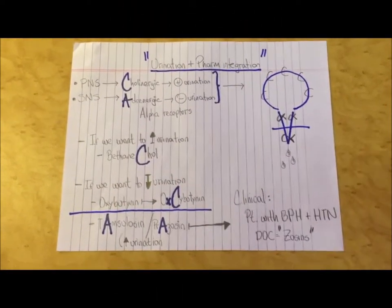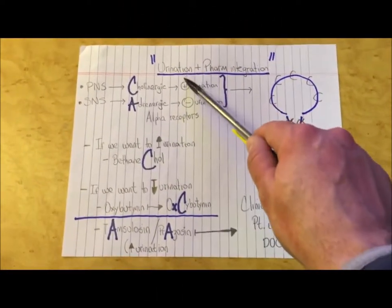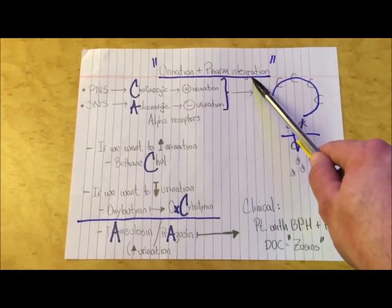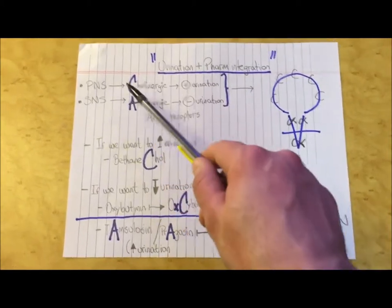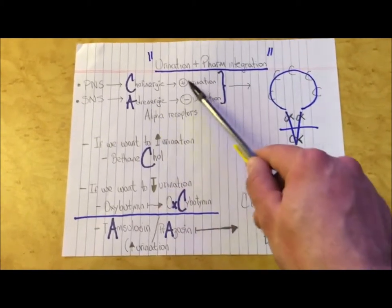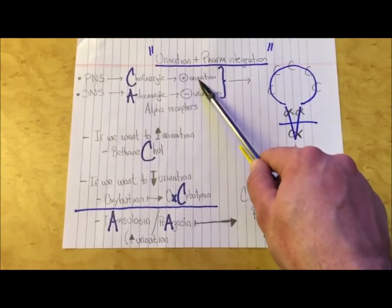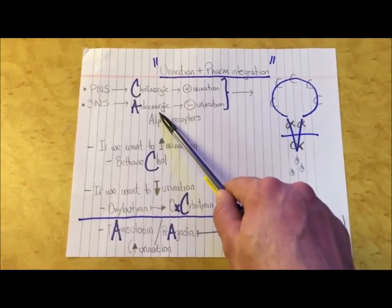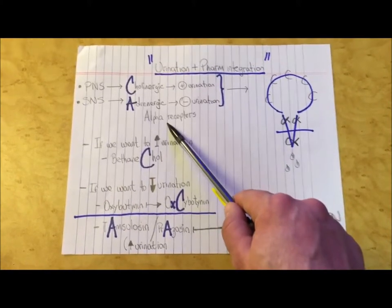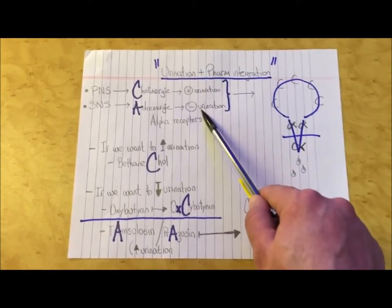This is an integration between the physiology of urination and pharmacology. Let's start by saying that the parasympathetic nervous system through cholinergic receptors stimulates urination. On the other hand, the sympathetic nervous system through adrenergic receptors, specifically the alpha receptors, inhibits urination.